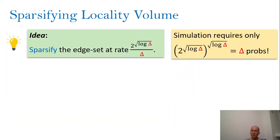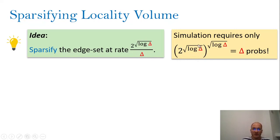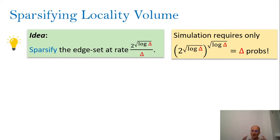Here is the key idea: since the vertices we care about are sufficiently dense — they still have large degree — why not sparsify the entire graph by the factor inverse proportional to this lower bound? These high-degree vertices will still have at least a few incident edges, and maybe in this sparsified graph we can still find a large enough matching for vertices with degree at least Δ / 2^(sqrt(log Δ)). This is the idea. What they actually show is that this can indeed be made to work. By sparsifying the graph at least straightforwardly, and working with a graph that now has much smaller maximum degree — the maximum degree of the new graph after sparsification becomes 2^(sqrt(log Δ)).